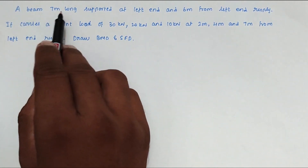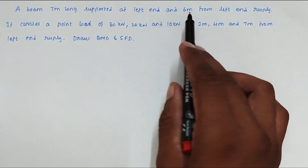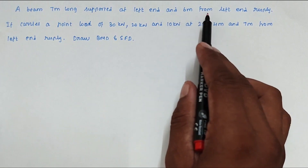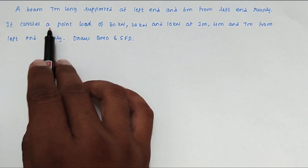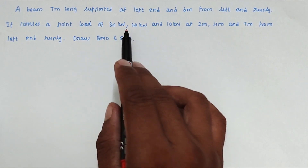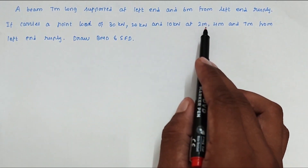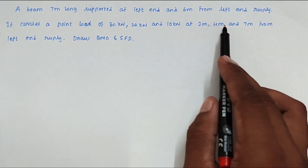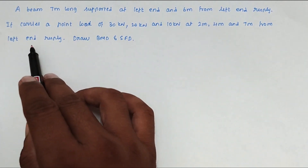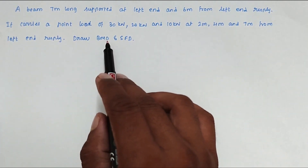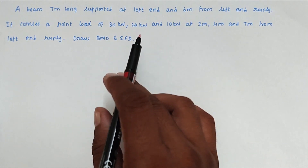The question is: a beam 7 meters long, supported at the left end and 6 meters from the left end respectively, carries point loads of 30 kN, 20 kN, and 10 kN at 2 meters, 4 meters, and 7 meters from the left end respectively. Draw the bending moment and shear force diagram.